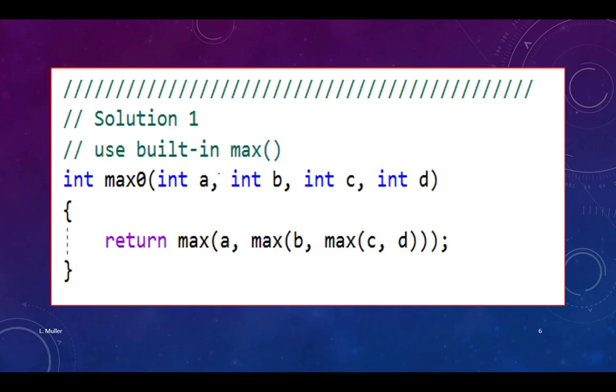My first solution, I simply use the built-in function called max. Somebody gives me a, I have no idea what a, b, and c are, but someone will call this function max zero with some numbers a, b, c, and d. This first function max will give me the answer of c and d. I don't know what it is, but it'll give me an answer.